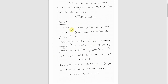So if P is a prime, the numbers 1, 2, 3, etc. up to P minus 1 are all relatively prime to P. Relatively prime to a prime. So if we consider 1 and 7, the GCD will be 1.